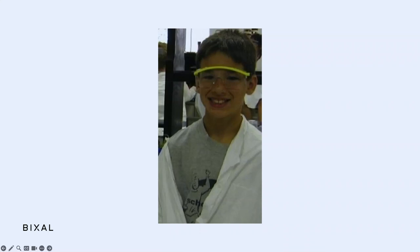I'd like to do a quick poll. Hold up one finger if you prefer to go straight for your favorite candies, and two fingers if you like to eat your favorites last. Interesting — we've got only two twos and everyone else is ones. I'm a two. My goal was to enjoy my candy as long as possible, so I grabbed a blank piece of paper and drew two columns and a whole bunch of rows — the lines weren't very straight and I needed a few pages, but it did the job.